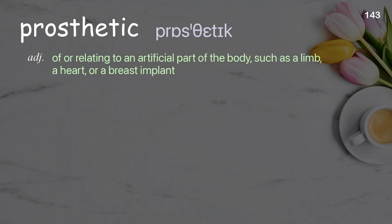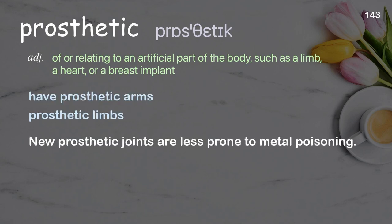Prosthetic: of or relating to an artificial part of the body, such as a limb, a heart, or a breast implant. Examples: have prosthetic arms; prosthetic limbs. New prosthetic joints are less prone to metal poisoning.